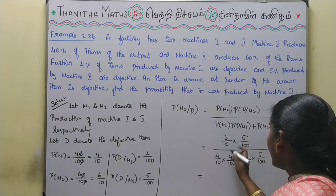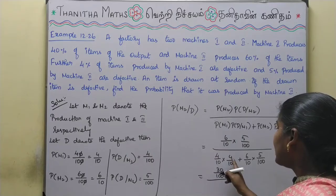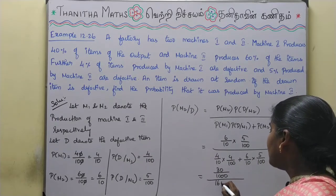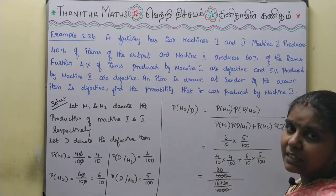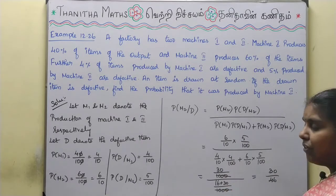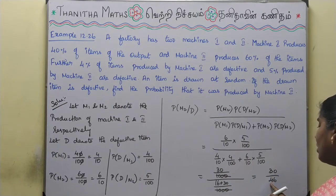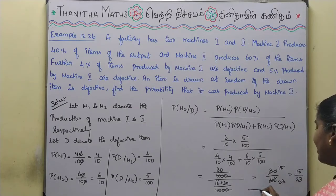Now we do the calculation. 6 times 5 is 30, giving 30 by 1000. The denominator: 4 times 4 is 16, and 6 times 5 is 30, so it is 16 plus 30 by 1000, which is 46 by 1000. Cancelling the 1000s, we get 30 by 46. Simplifying by dividing both by 2 gives 15 by 23. This is our required answer.